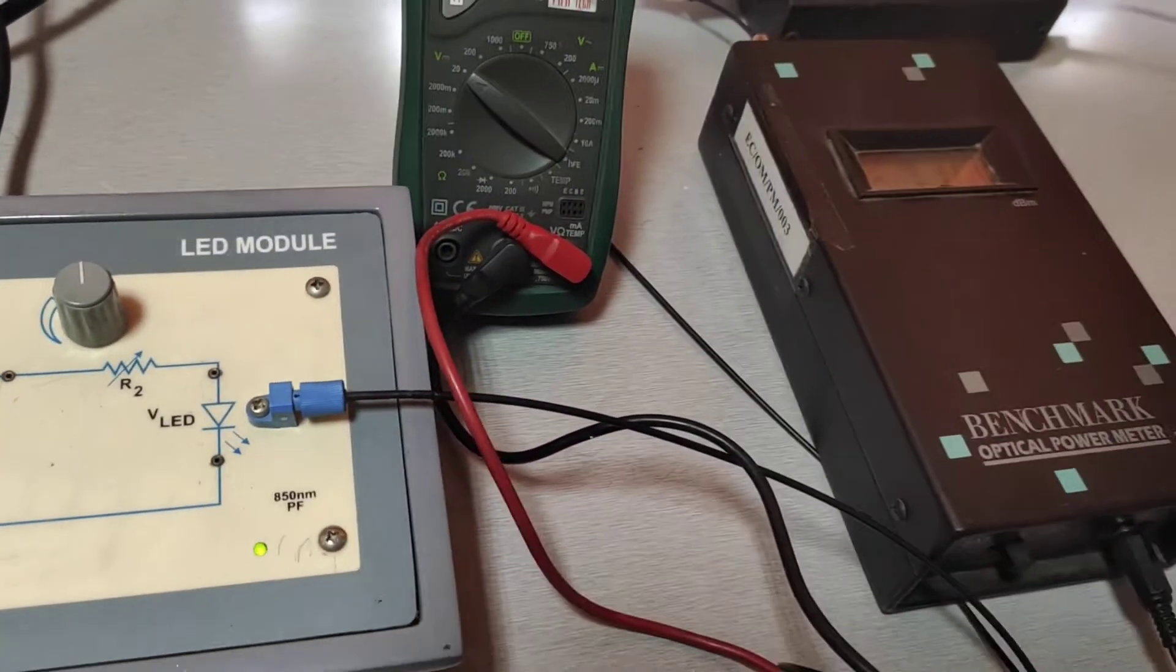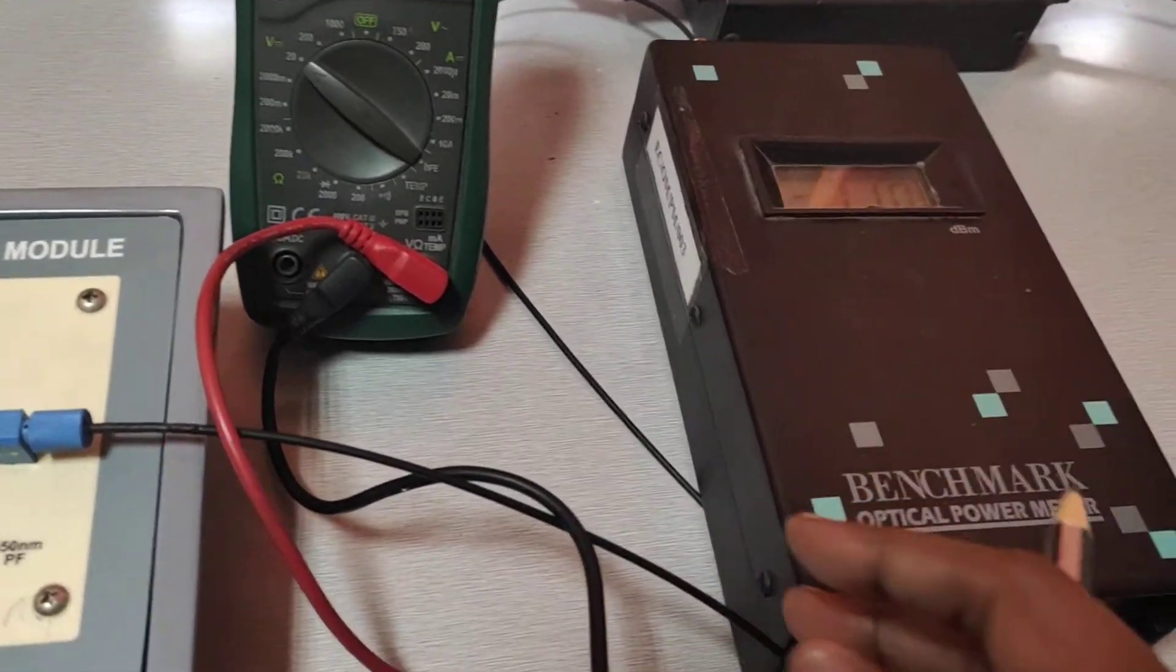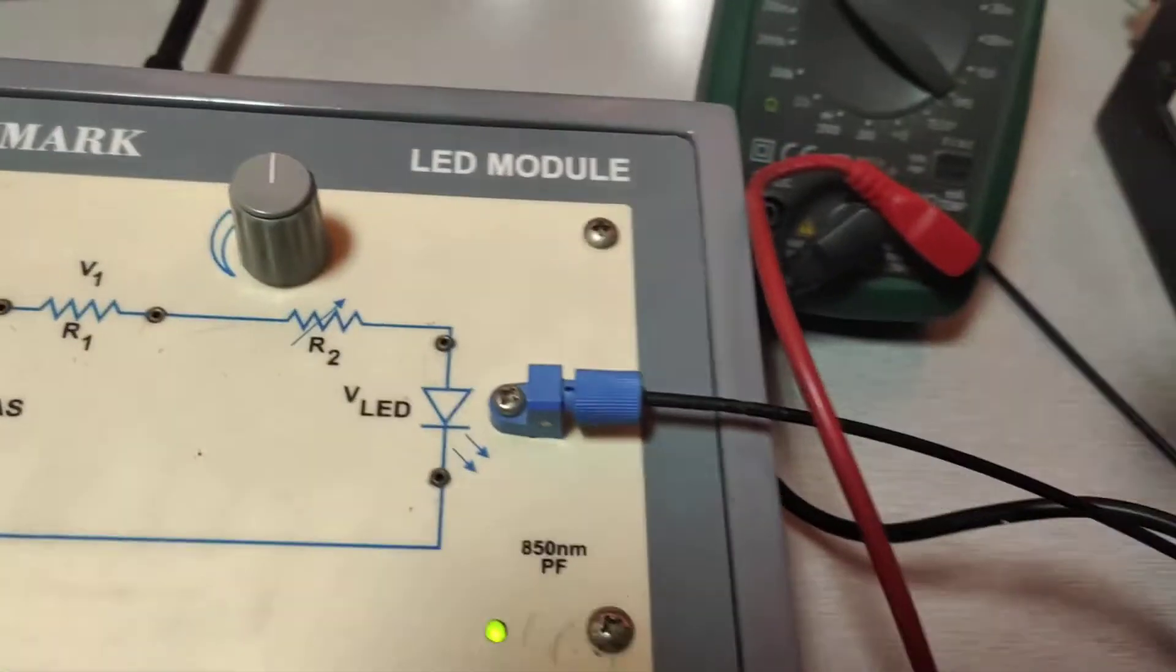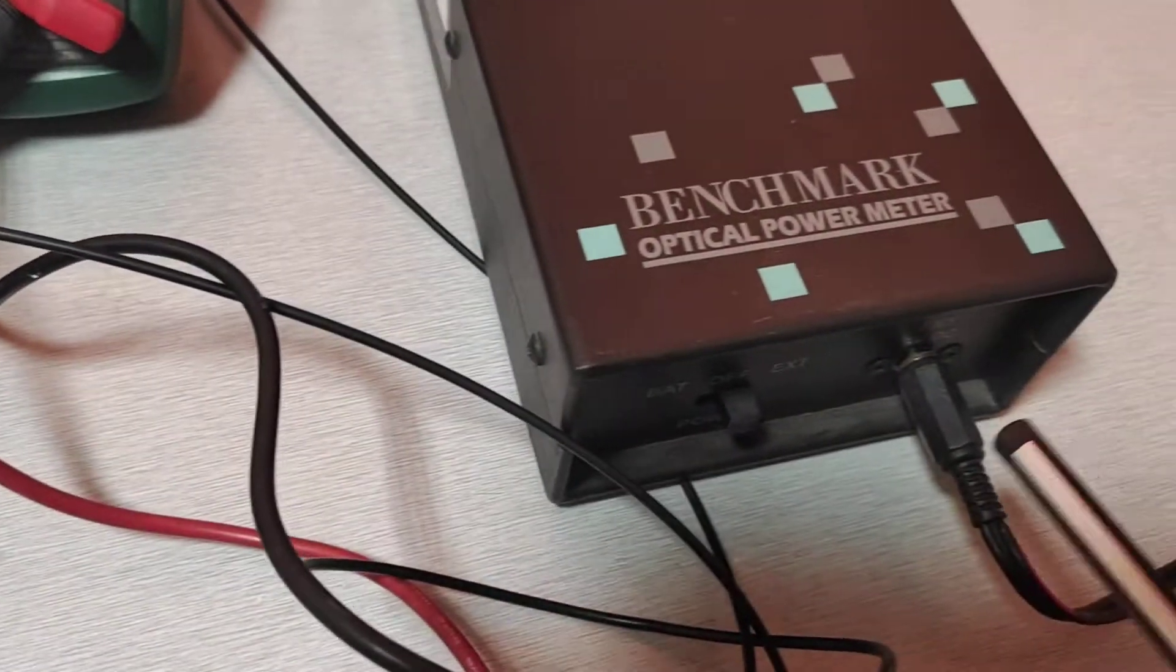Correspondingly, we measure the optical power. With the help of this power meter, I will measure the corresponding output power. One end of the fiber is connected to the LED and another end is connected to the optical power meter.